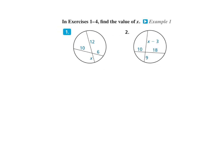Let's do some problems. Both of these have the vertex on the inside, so we take each of the parts multiplied together. We have 12 and X, multiply them: 12X. That equals the other two parts, 10 times 6, which is 60. So 12X equals 60, divide by 12, and X equals 5.